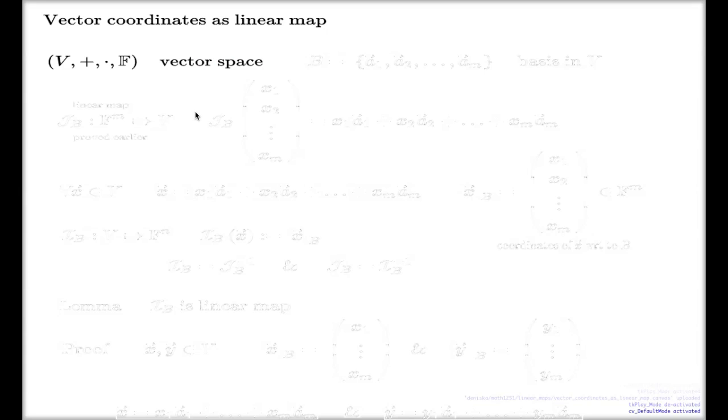In this vector space, I will fix a basis B, like this, with m elements. That's my setting in this slide. Within such a setting, on Thursday, there was an example of a linear map when we discussed the concept of an image of a linear map.